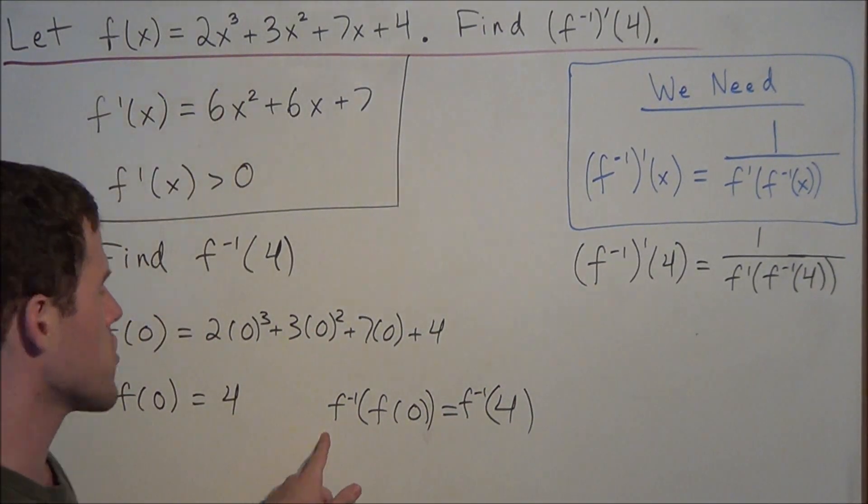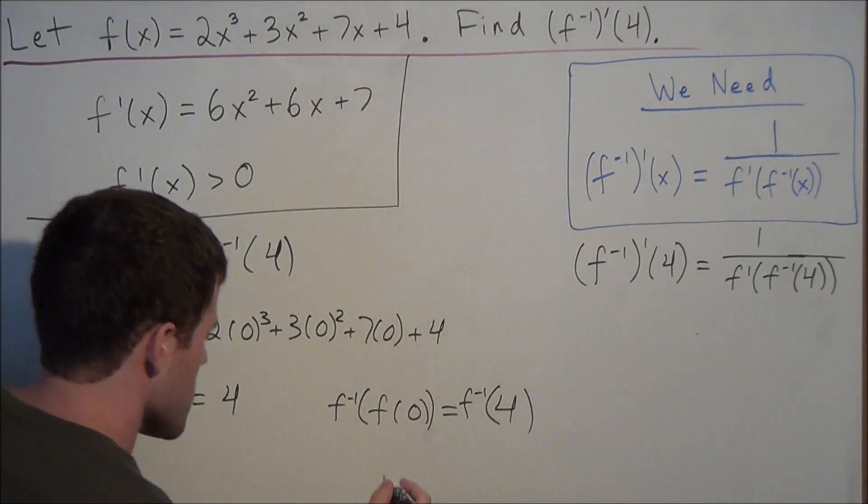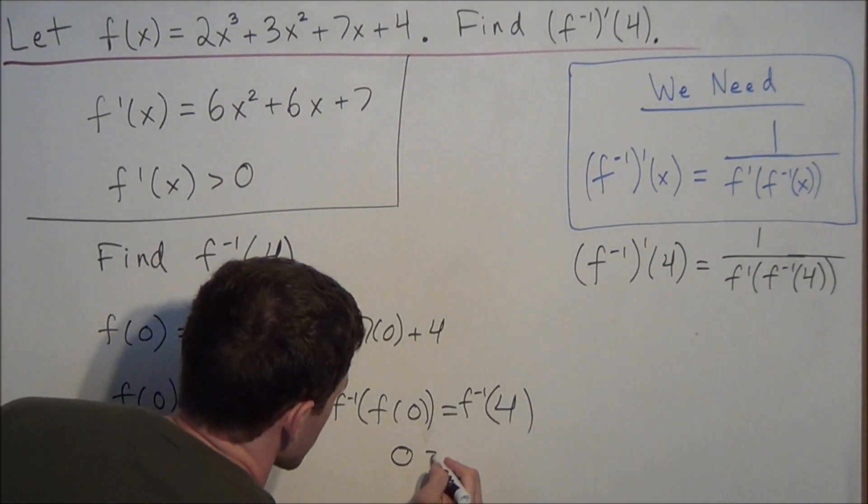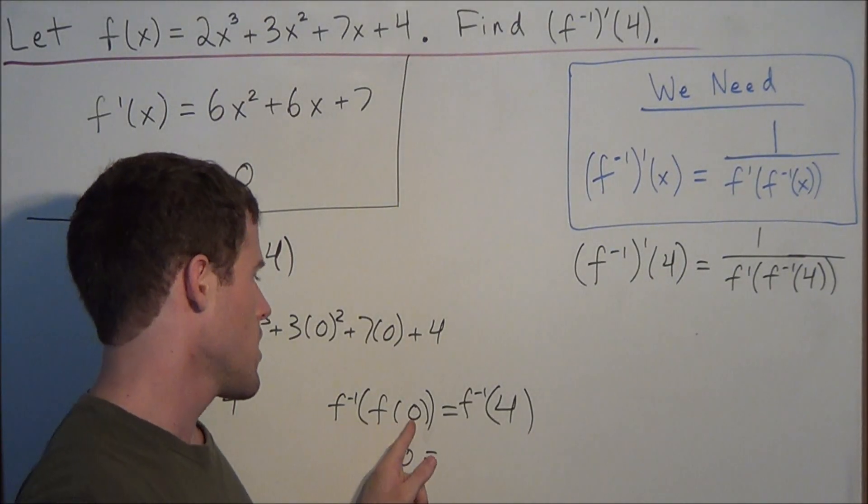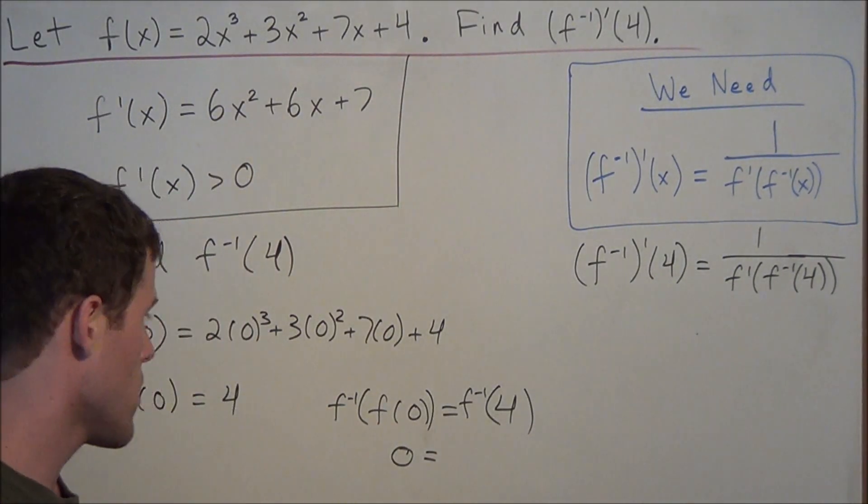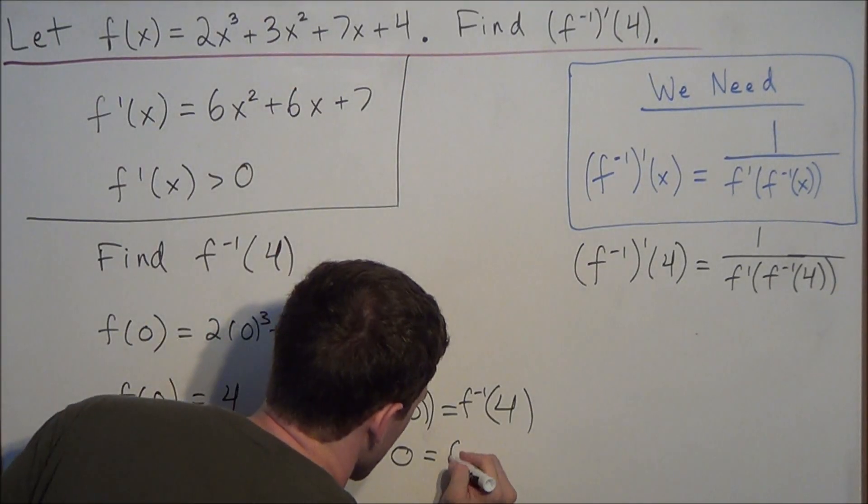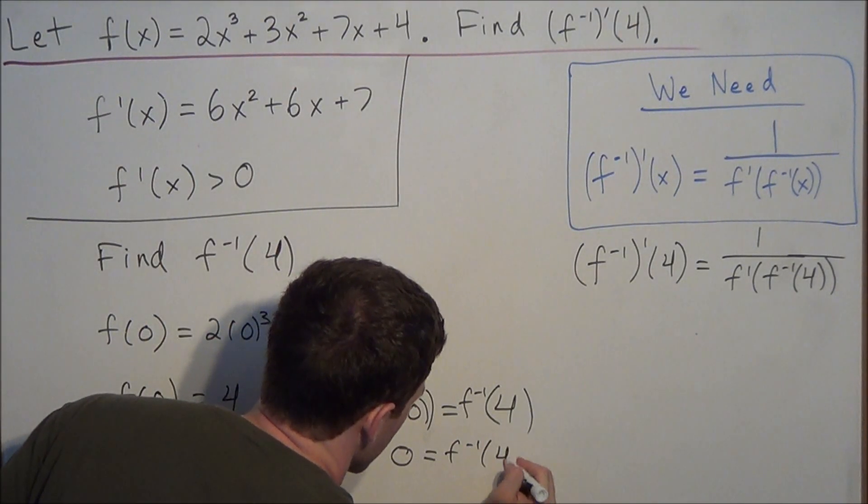Notice that f inverse of f of 0 is simply 0, because if we send a function into the inverse function, it simply gives us our original input value. So we have 0 equals f inverse of 4.